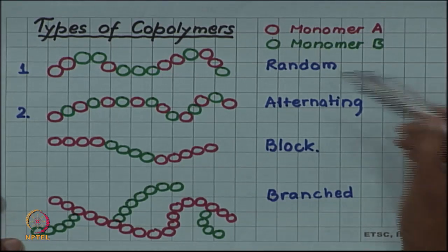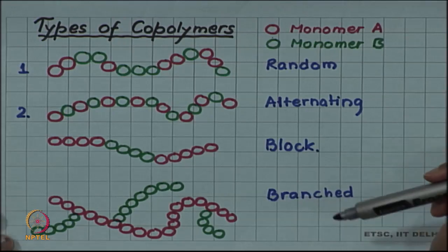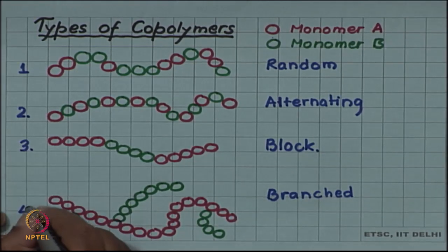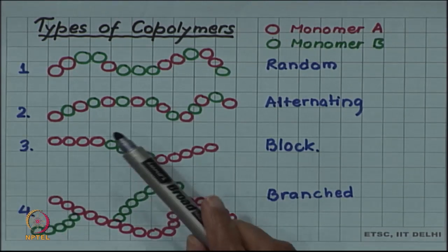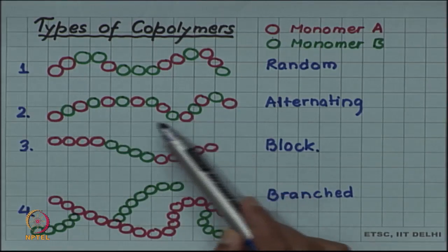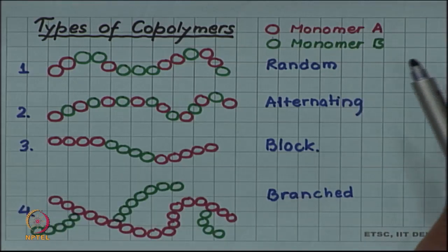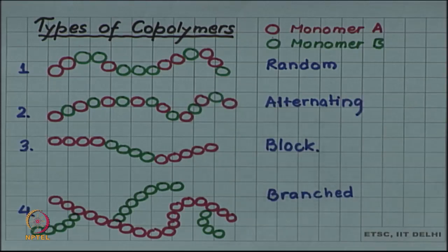So random copolymer, alternating copolymer, block copolymer, and branched copolymer - all these different varieties are possible for copolymers. You can think of alternating copolymer as an ordered solid solution, an analog of ordered solid solution, whereas random copolymer is an analog of a disordered solid solution which we discussed in the case of metals.